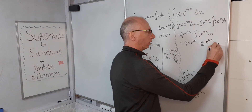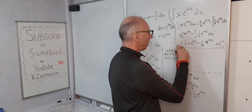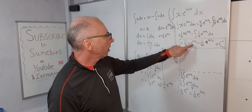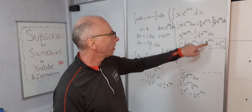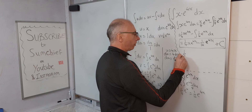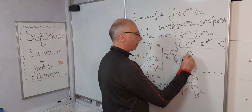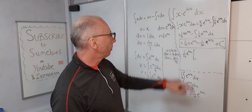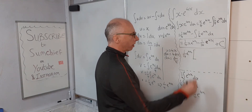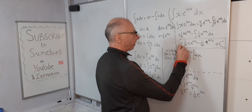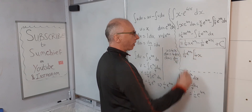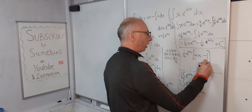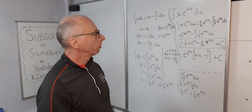We could leave it like that with plus C and that would be a good enough answer, but we can do better. We can factor out one sixteenth e to the 4x from both terms — noting that one quarter can be written as 4 over 16 — giving us one sixteenth e to the 4x times the quantity 4x minus 1, plus C. That's our final answer.